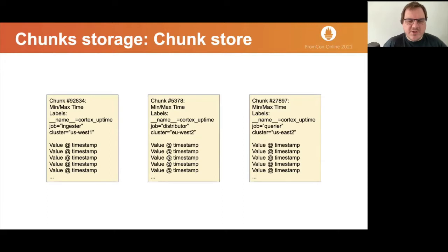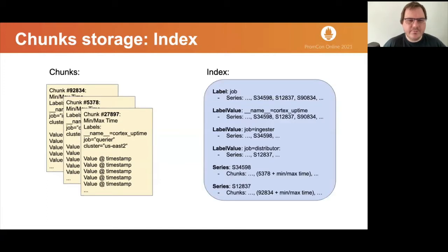Each chunk is stored separately, for example as individual object in the cloud storage or individual cell in Bigtable. As you can imagine, this generates a huge number of objects or cells. Due to the replication, individual sample may end up in multiple chunks, although Cortex chunk storage does have some features to reduce this duplicity.